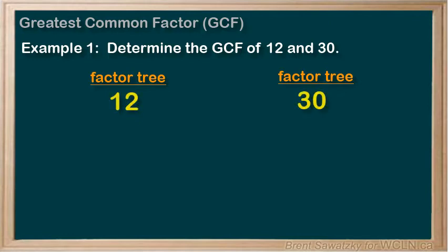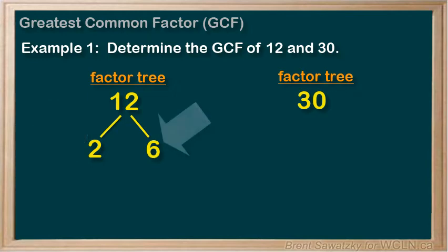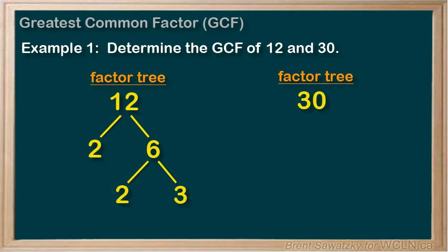The factor tree for 12 could look like this. 12 can be broken down into 2 and 6. 2 is already prime, so looking at the 6, it can be broken down into 2 and 3. We're at all prime numbers, so we stop here.